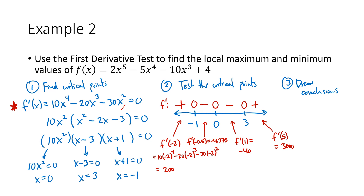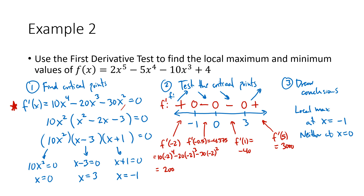At x equals negative one, f goes from increasing to decreasing — the function was going up and then started going down — so I've got a local max at x equals negative one. At x equals zero, the function goes from decreasing to decreasing — it leveled out and kept going down — so that's neither a max nor a min. At x equals three, the function goes from decreasing to increasing — it was going down and then started going back up — so that's a local min at x equals three.